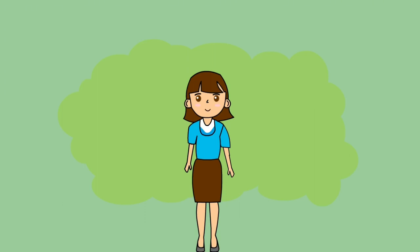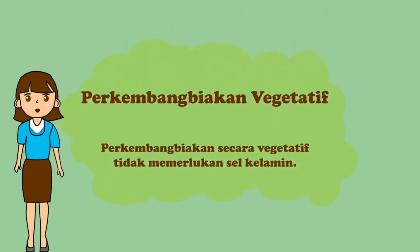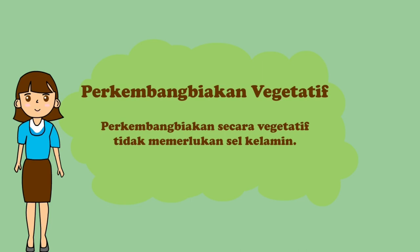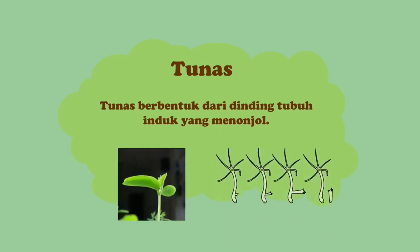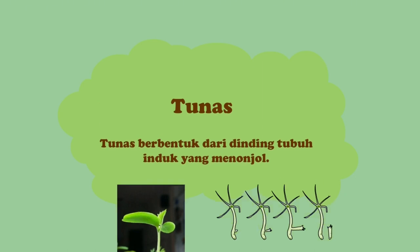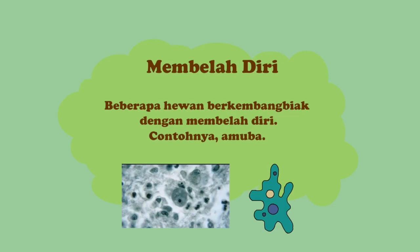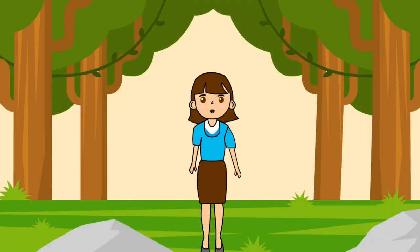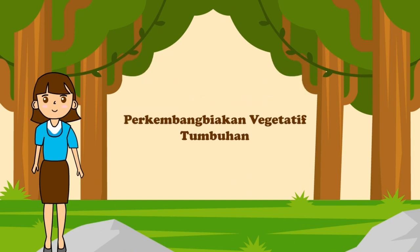Selanjutnya, kita akan mempelajari perkembangbiakan vegetatif. Perkembangbiakan secara vegetatif tidak memerlukan sel kelamin. Individu baru bisa muncul dengan beberapa alat perkembangbiakan berikut. Yang pertama, tunas. Tunas terbentuk dari dinding tubuh induk yang menonjol. Tunas ini dapat tumbuh membesar dan setelah besar, tunas memisahkan diri dari induknya. Yang kedua, membelah diri. Beberapa hewan berkembang biak dengan membelah diri, contohnya amoeba.